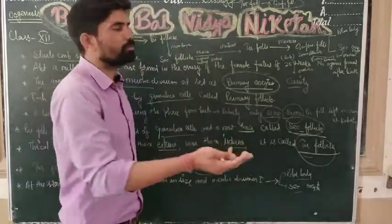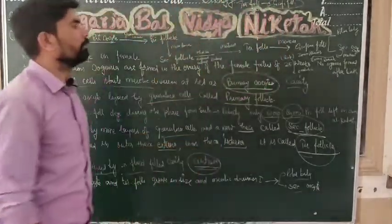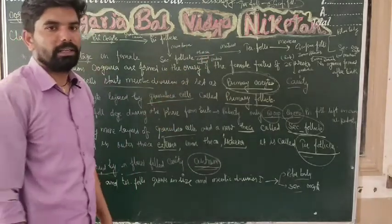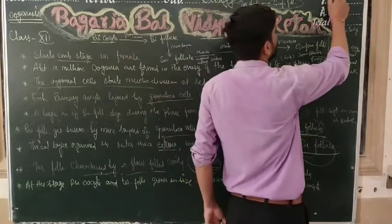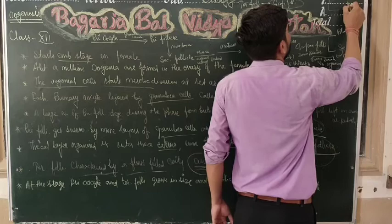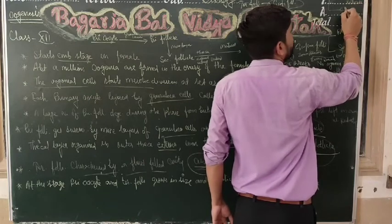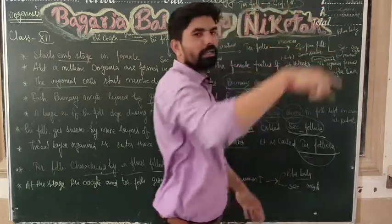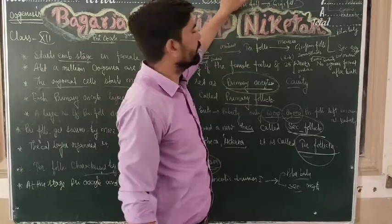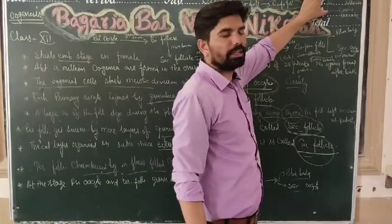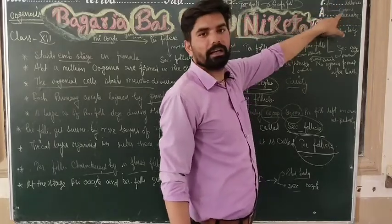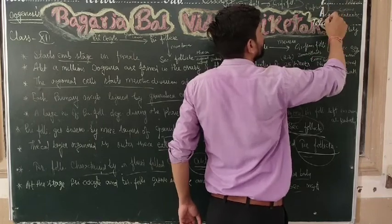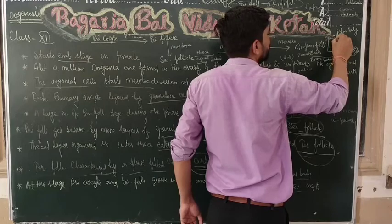The tertiary follicle transforms into the Graafian follicle. In the Graafian follicle, the secondary oocyte is surrounded by two layers: the zona pellucida and the corona radiata. When the zona pellucida ruptures, the secondary oocyte is released.